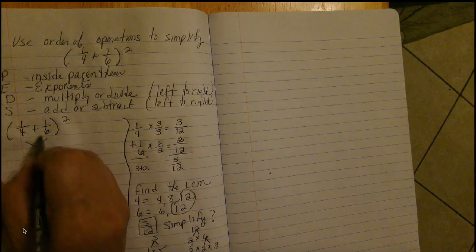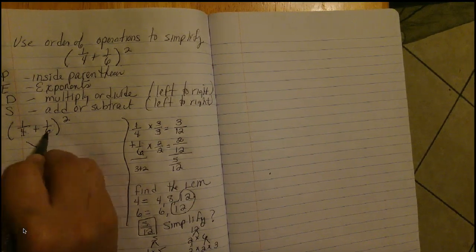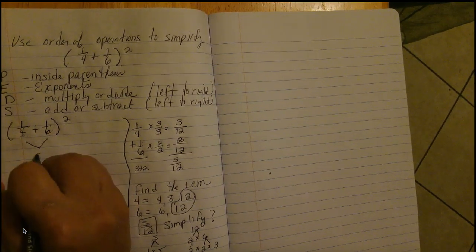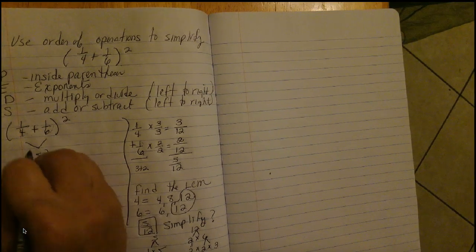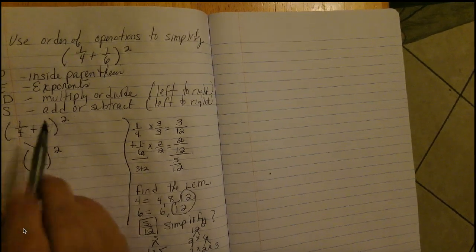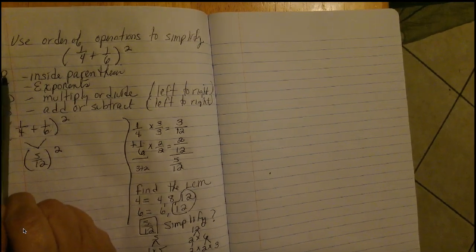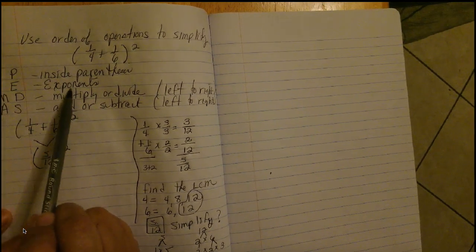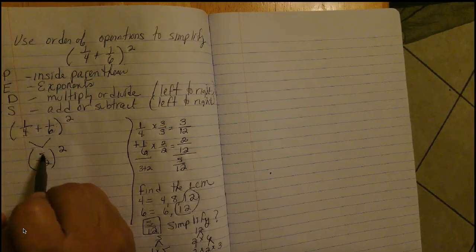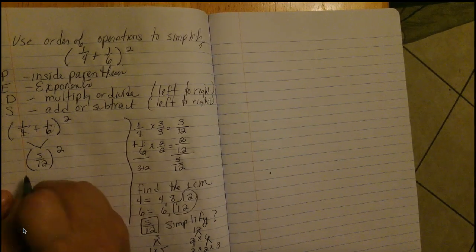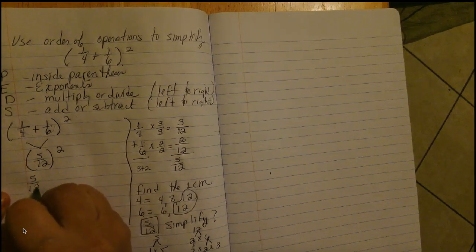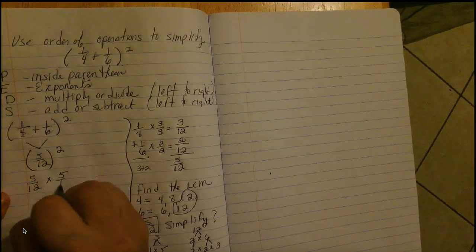Okay. So, the answer to one-fourth plus one-sixth is five-twelfths. The next thing I'm going to do is work on my exponents. So, this is five-twelfths to the second power. So, this becomes five over twelve times five over twelve.